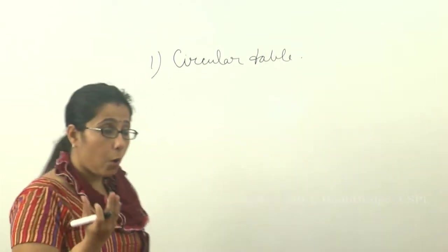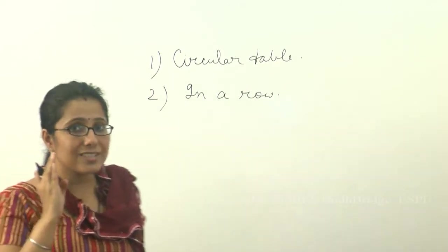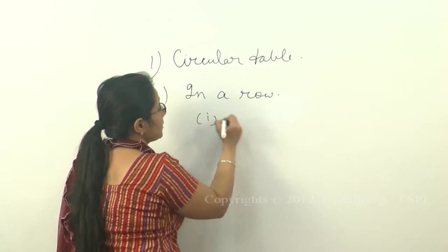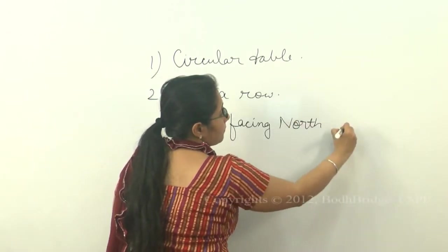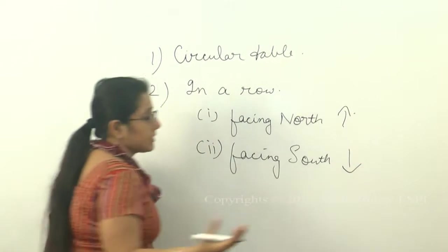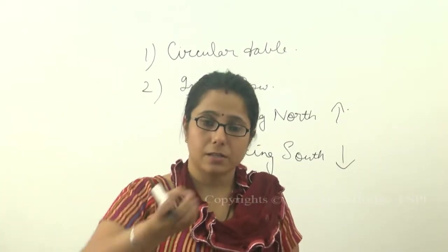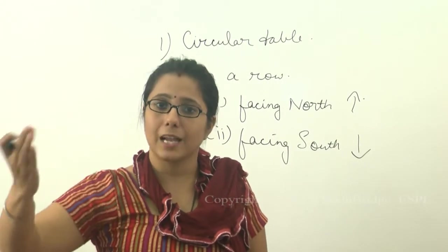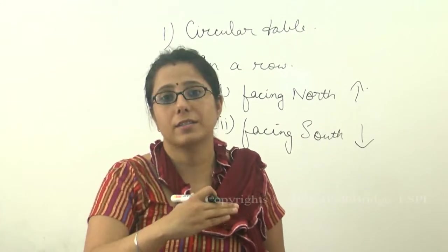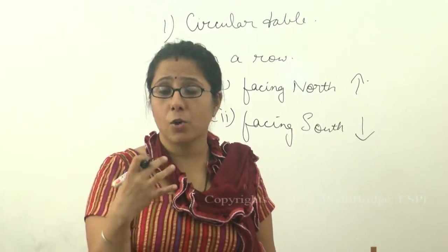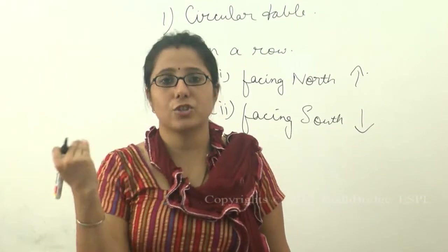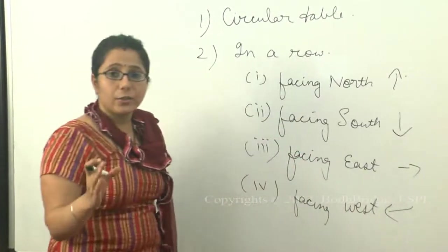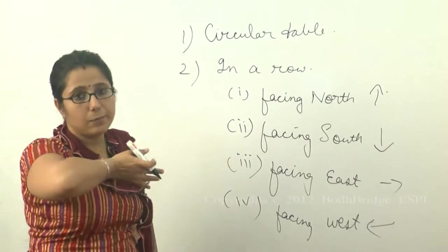There are certain conditions for row arrangements. In a row means facing - there are subparts: facing north, facing south, facing east, or facing west. It will be mentioned in the questions that so many persons are seated in a row facing a particular direction. According to the given conditions, you have to arrange them.